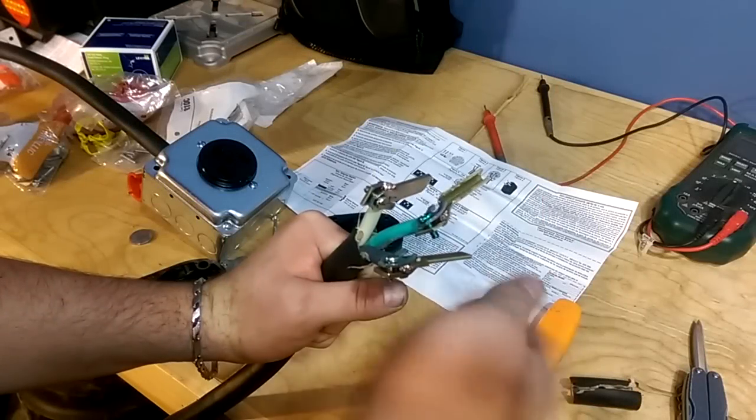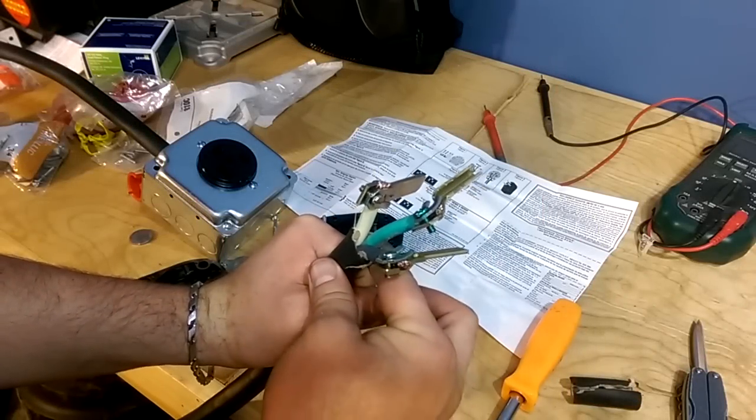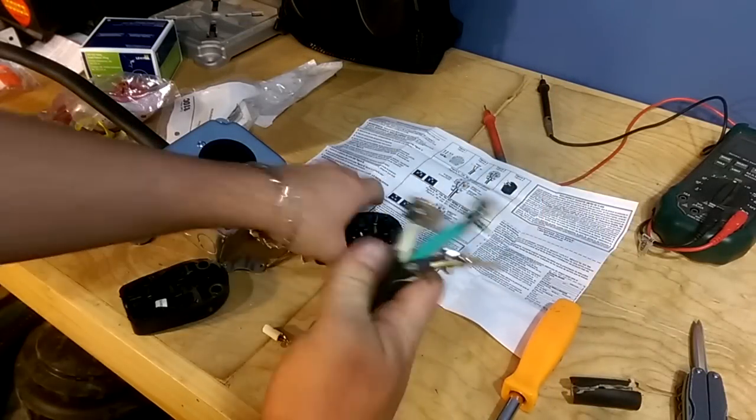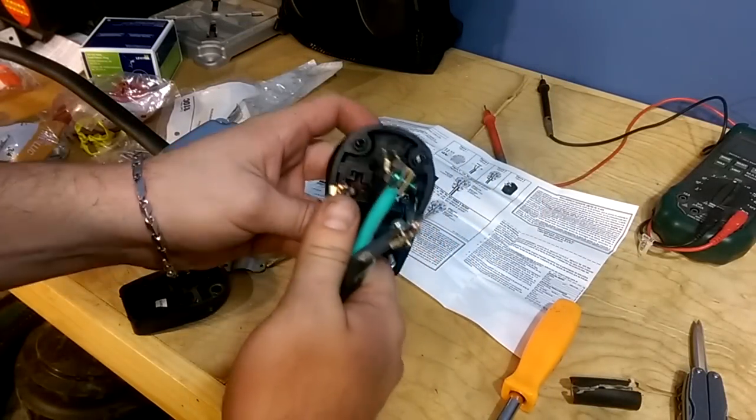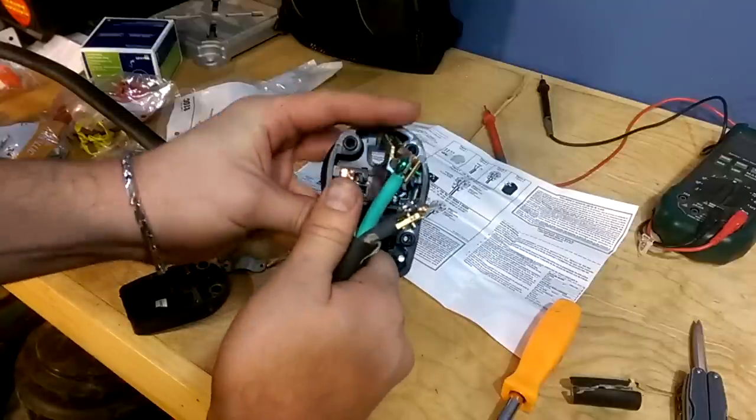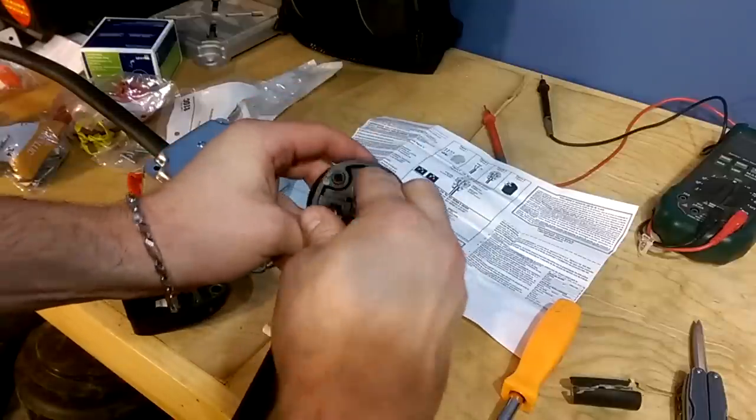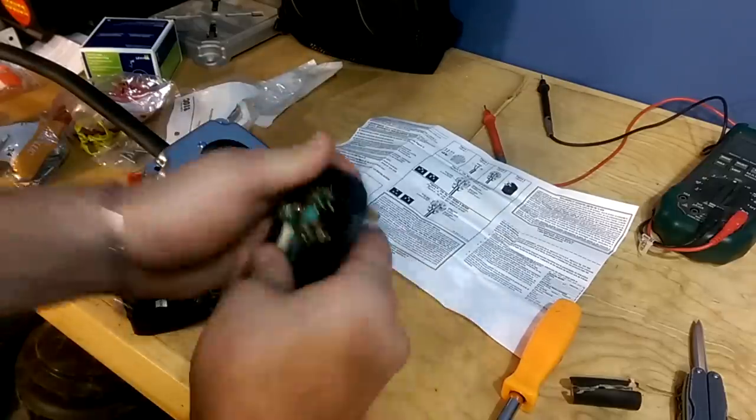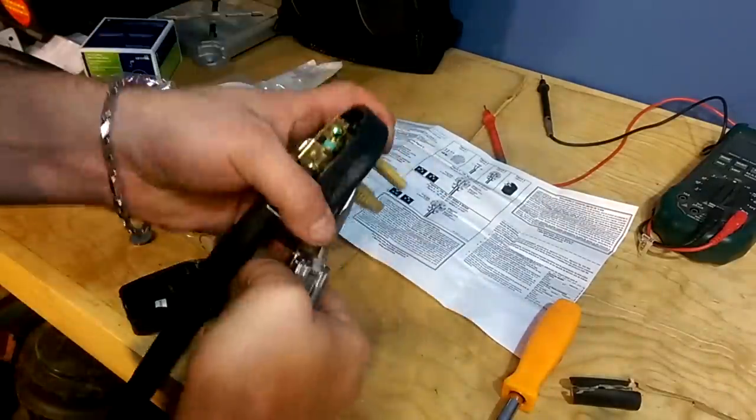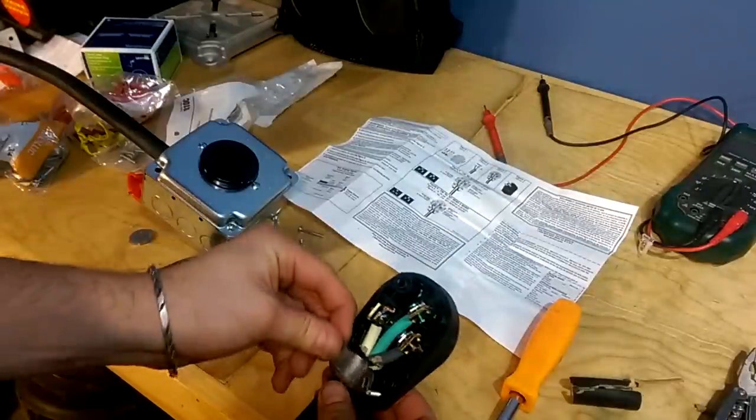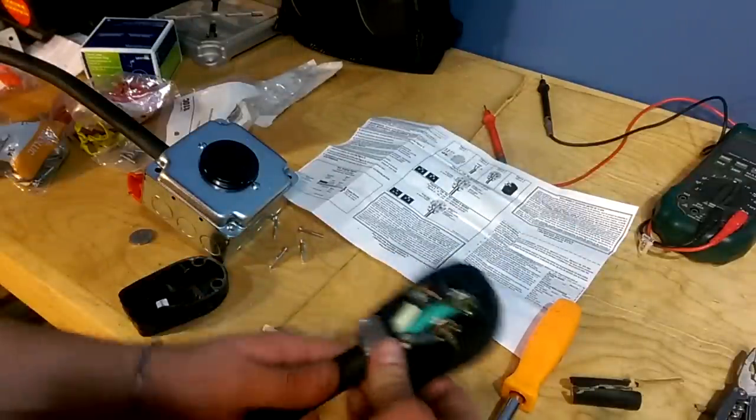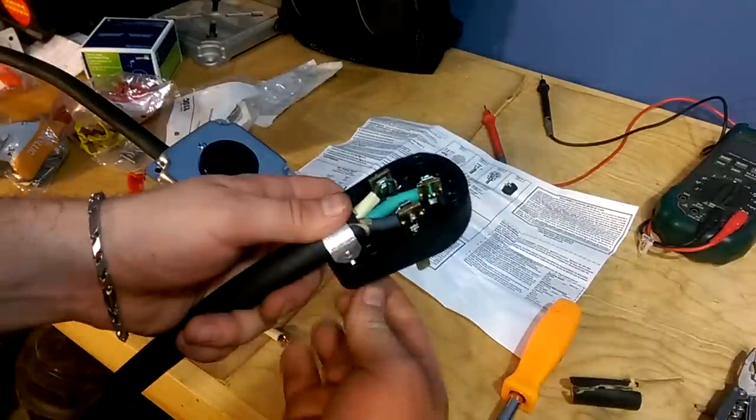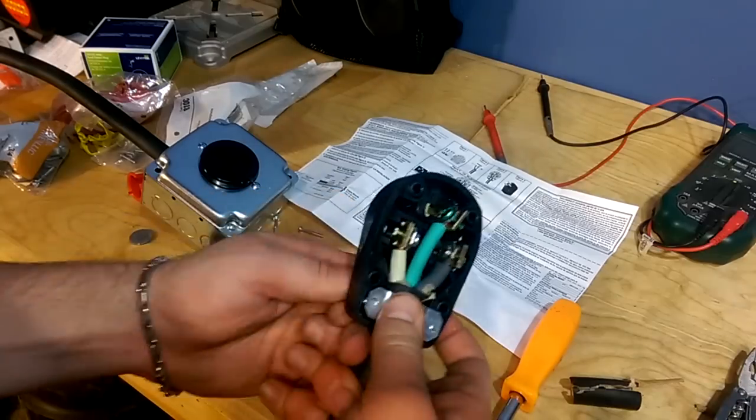Now that I got the fingers or whatever they're called screwed up to the ends of the wire, I'll just slip them in the appropriate connectors or the slots in the plug housing. Now that these are all in place, we'll start by screwing down this little clamp here.